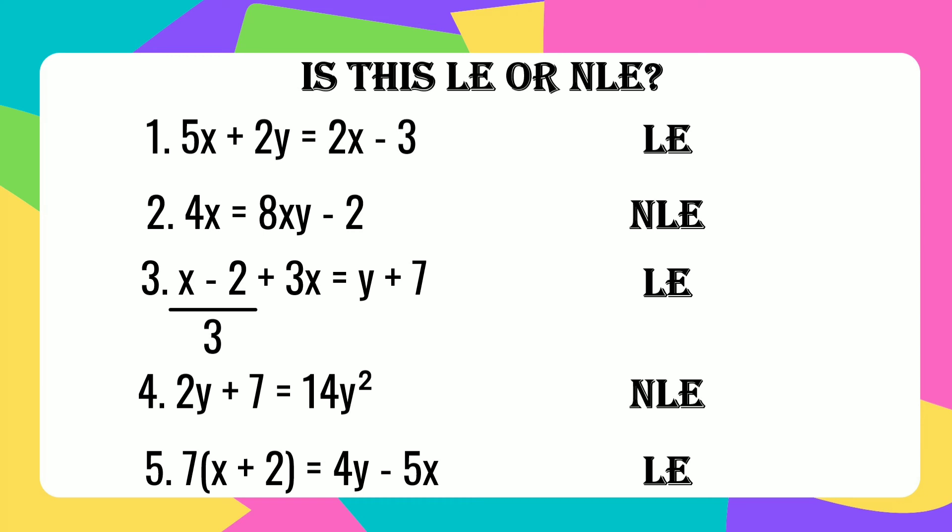This is how to identify linear equations in two variables. Always remember: it can be written in standard form ax plus by equals c, or in slope-intercept form y equals mx plus b. The exponent of the variable must be 1, no variable appears in the denominator of a fraction, and no two variables are part of the same term.